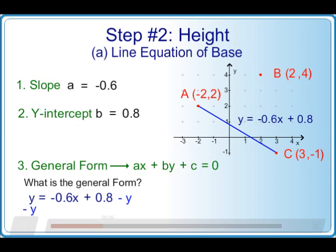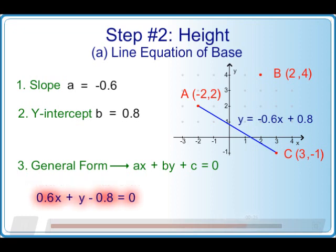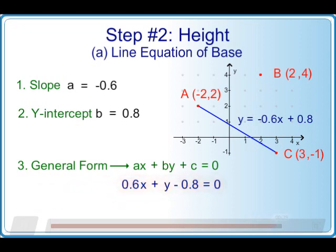We subtract y from both sides to get the right hand equal to 0. We then multiply by minus 1 to make sure that the coefficient of x, which is point 6, is positive. The general form for line AC is point 6x plus y minus point 8 is equal to 0.